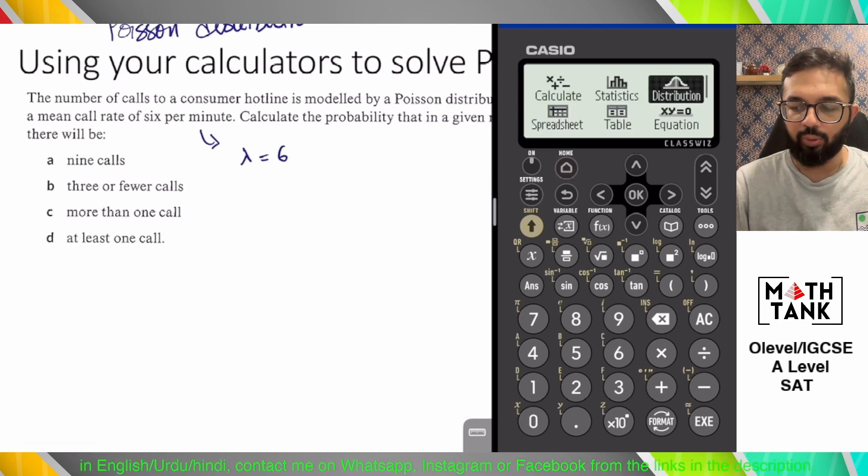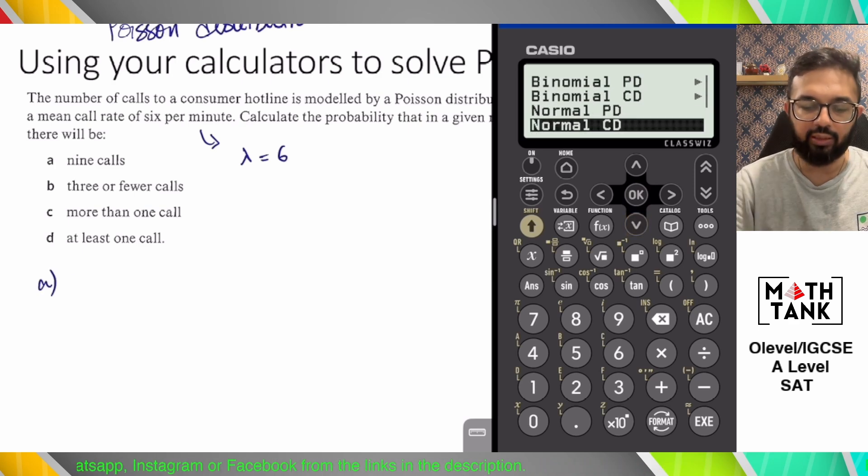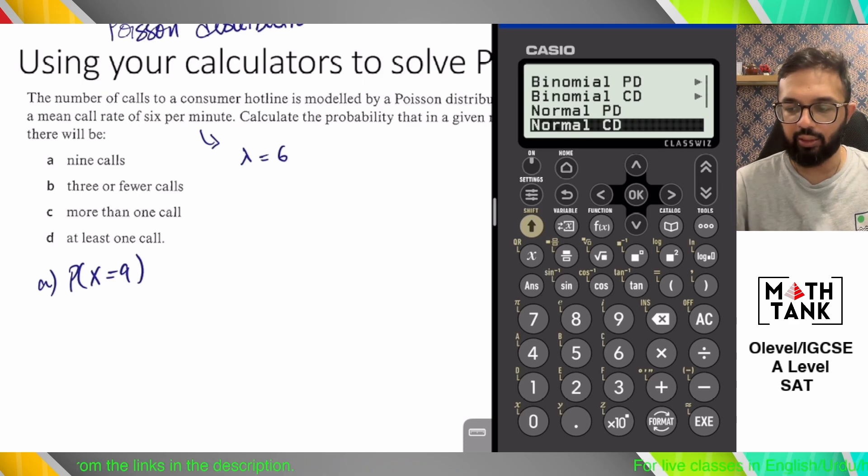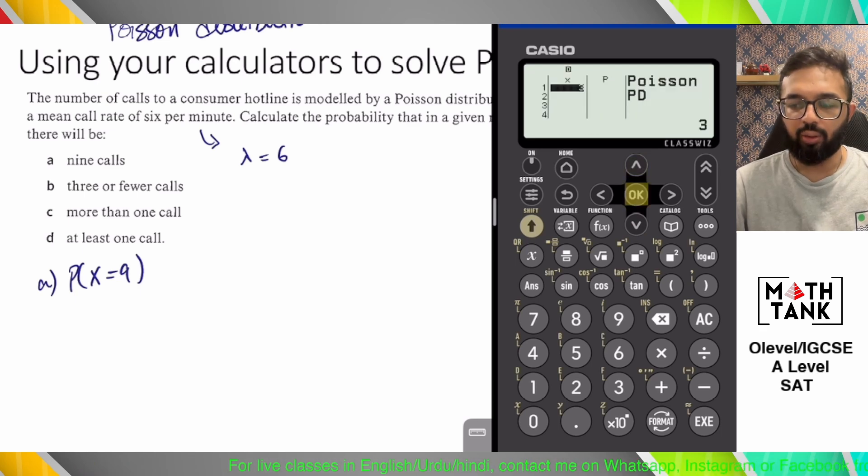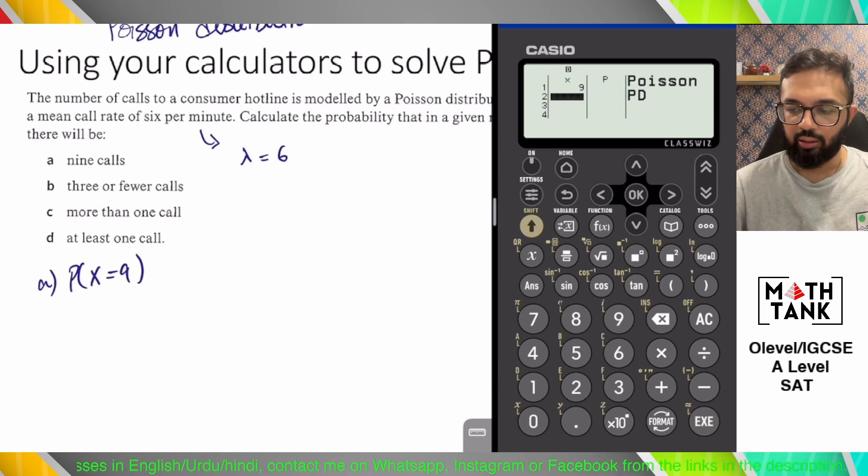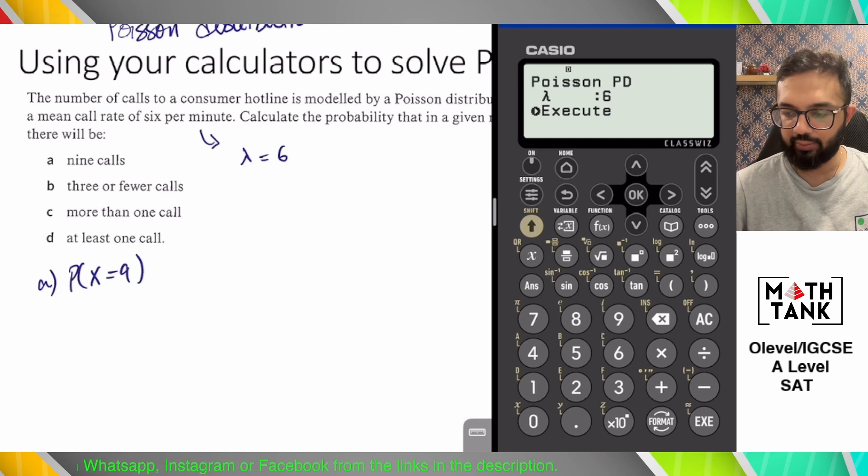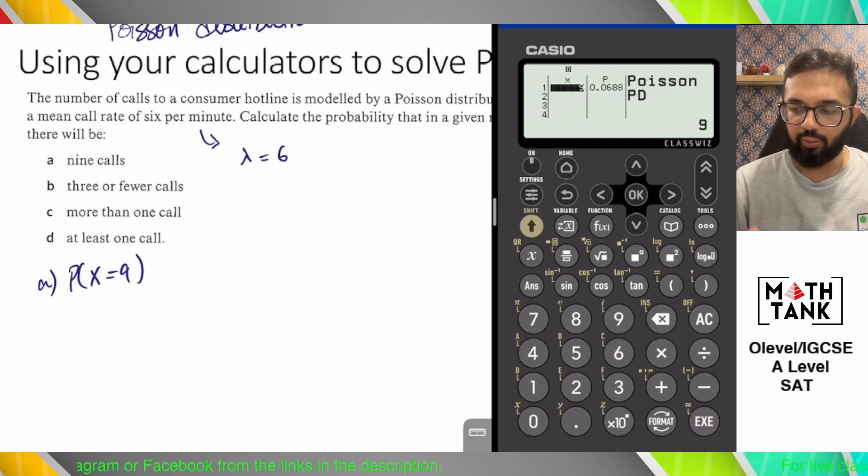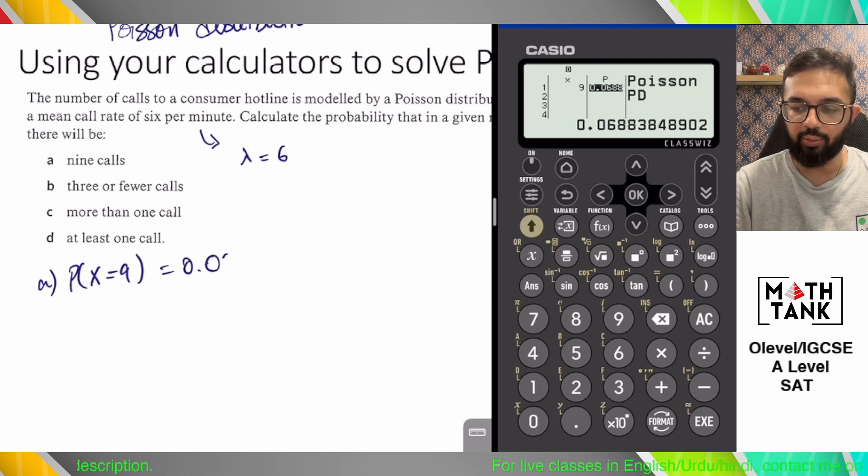So you go to distribution again. This time, because you want to calculate the probability of something that is exactly 9, on your calculator you go down, keep scrolling until you have Poisson PD. Go to list and plug in 9. You want your lambda to be 6. So you execute that and you find out that the probability is 0.06.